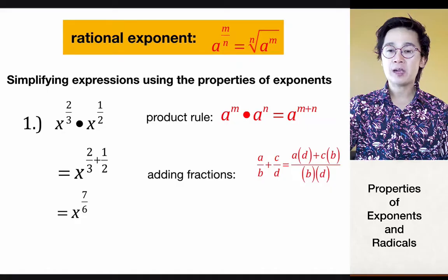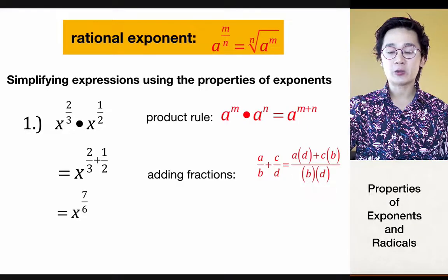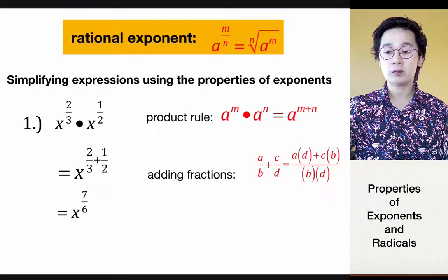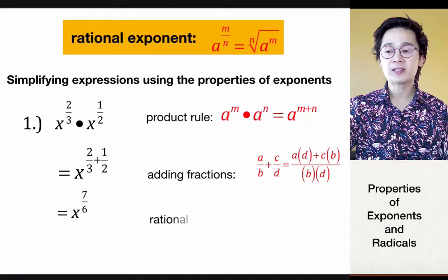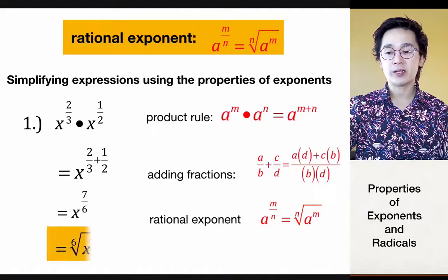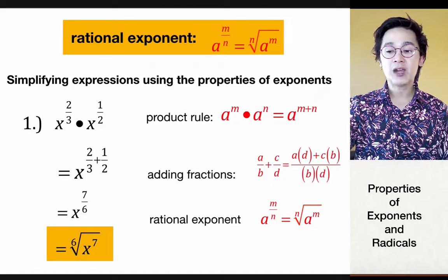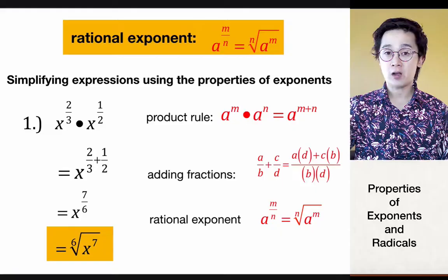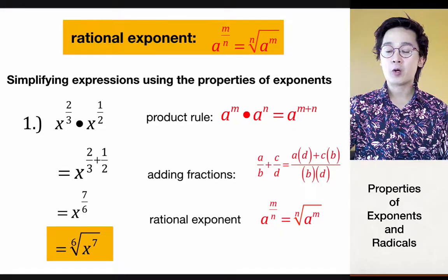Now that we have x raised to 7 over 6, we can further simplify by changing it into radical form. Although x raised to 7 over 6 is the simplest rational exponent form, we can convert it to give another version. Our final answer could be the 6th root of x to the 7th, or x raised to 7 over 6. These are applications of multiple laws of exponents in one problem.